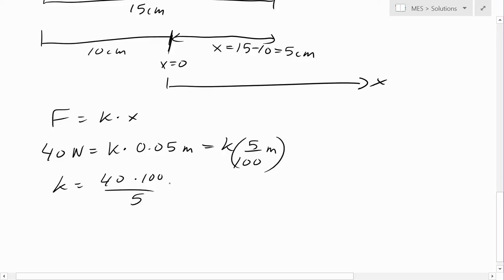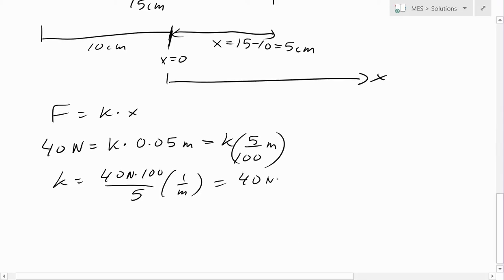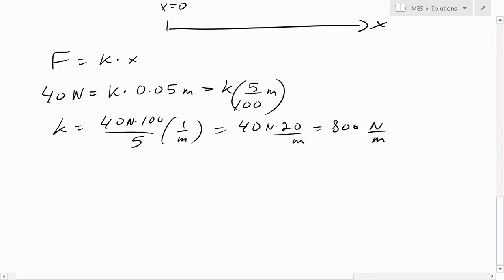This 100 divided by 5 is just 20, so we'll get 40 newtons times by 20 up top, over units of meters. So 20 times 40 is 800, and the units for this is newton divided by meter. So that's our k constant.